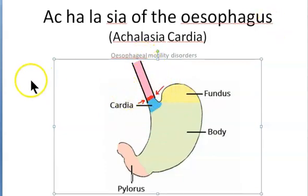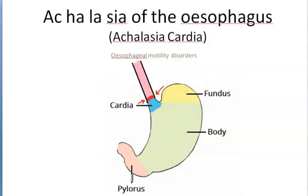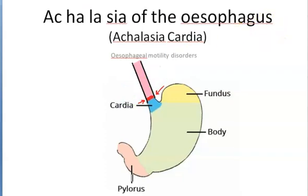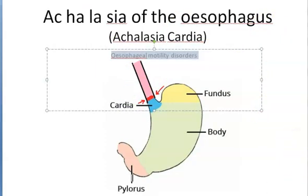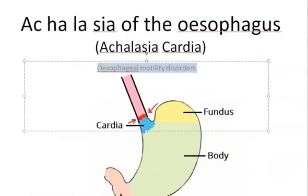So what exactly is happening here? The lower part of the esophagus — the sphincter here — is very tight; it doesn't relax. So what happens is the food you eat will get accumulated here. This will cause dilatation of the esophagus, stasis of food, and infection. The person is not able to send the food into the stomach from the esophagus, so he will have difficulty in swallowing. It is an esophageal motility disorder — there is a problem with the motility of the esophagus.